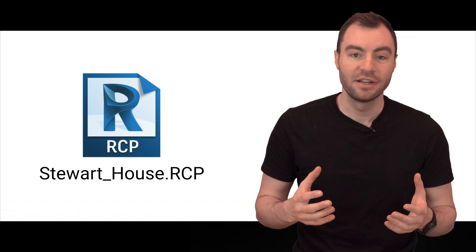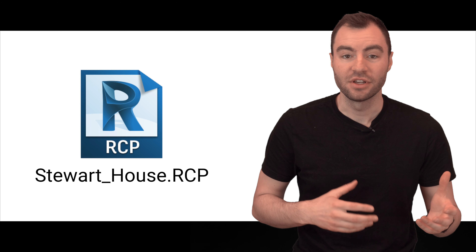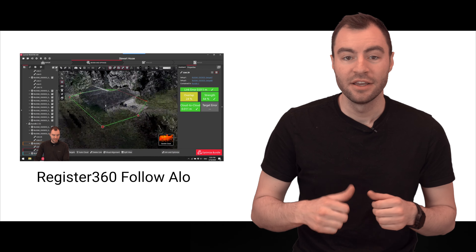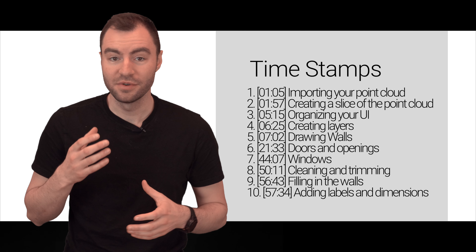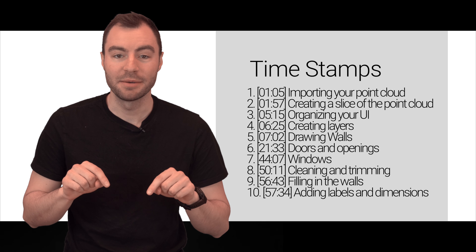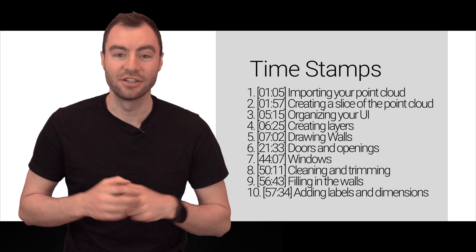I've exported it out as an RCP file, which is Autodesk's native format. If you want to see how I put this data together and cleaned it up, you can check out this video here. You'll also notice in the download link below that there's an LGS file — we'll be using this later in the video. This is going to be a pretty in-depth tutorial, so if you want to skip to a certain section, I'll put the timestamps in the description below.